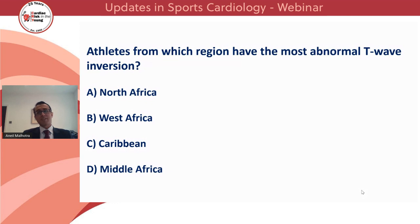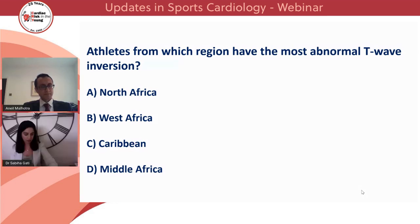I'd like to ask the audience this question: from which region do athletes have the most abnormal T-wave inversion? Is it A, North Africa; B, West Africa; C, the Caribbean; or D, Middle Africa?